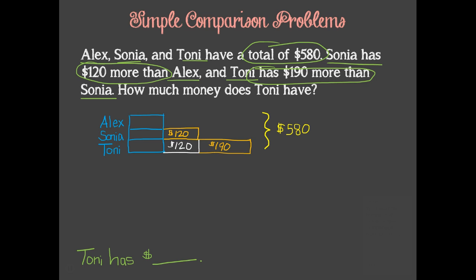Our question mark should go at the end of Tony's unit bar, since we are asked to find out how much money she has. Now we can see that we need to find out the dollar amount for each of these blue bars that the three friends have in common.